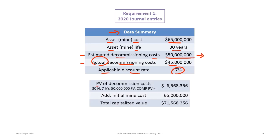We must determine the total capitalized value of the mine, which consists of two things: the mine cost itself of $65 million plus the present value of those future decommissioning costs. Using your calculator, we would input 30 N, 7 IY, $50 million future value, and zero PMT, which gives a present value of $6,568,356. So the total capitalized value of the mine, including the present value of the future decommissioning costs, is $71,568,356.